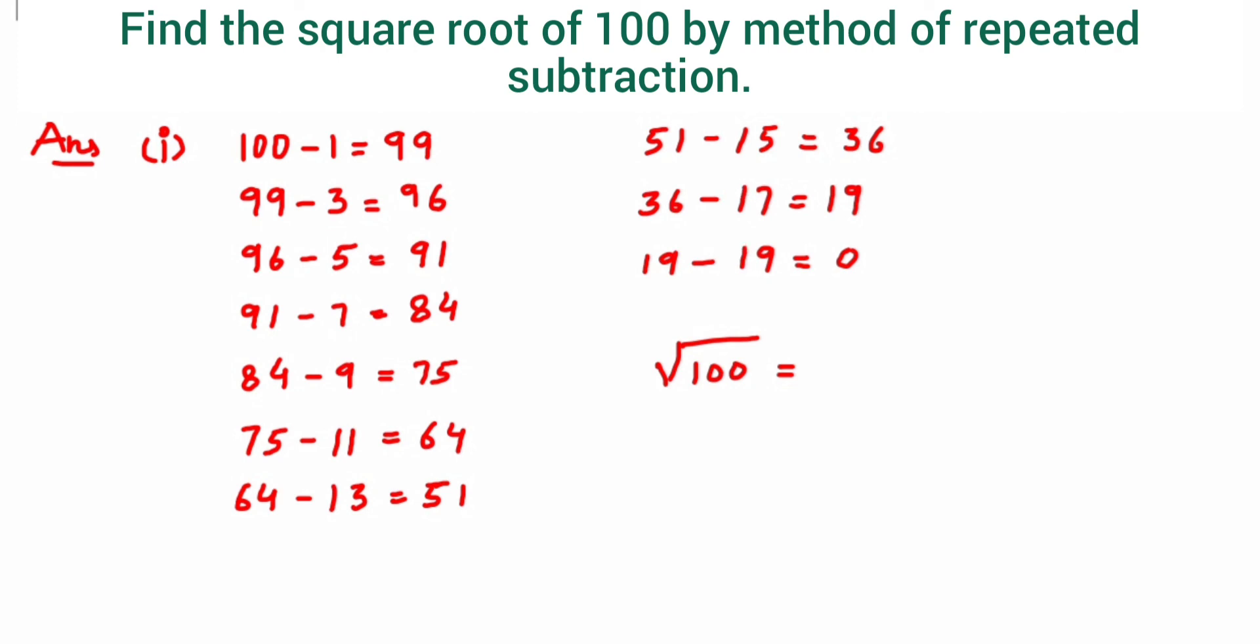So the answer will be 10. When you use 10 odd numbers, you got 0 as an answer. So this was a simple method, but if in the question they have asked to find out by repeated subtraction, you can go for this method. That's it, thank you so much for watching.